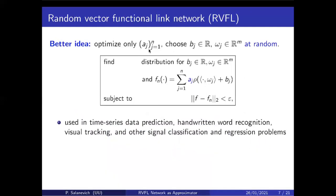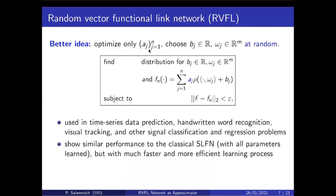This randomized idea is what's called Random Vector Functional Link networks — RVFL — and these have been used quite a bit in practice for handwritten letter recognition, visual tracking, and many other tasks. In practice they show quite similar results to when you learn all the parameters, though the learning process is much faster. However, there isn't much theory around them, and that's the gap we were trying to close in this project.